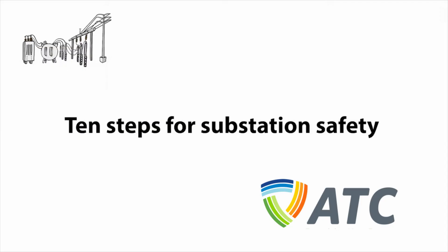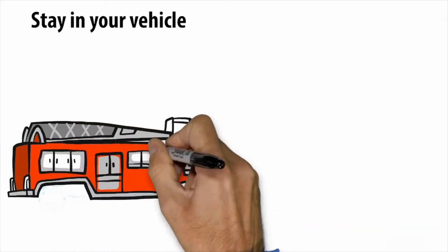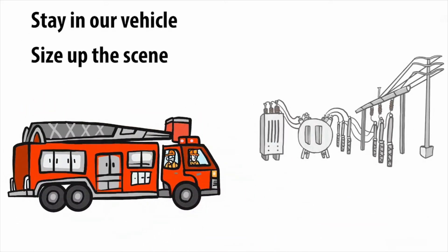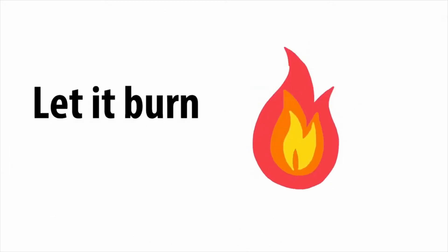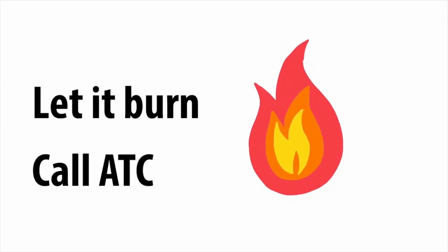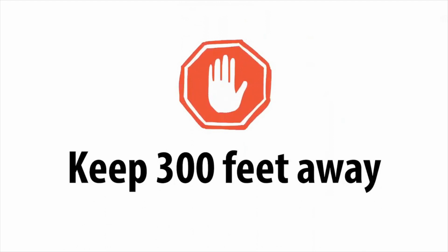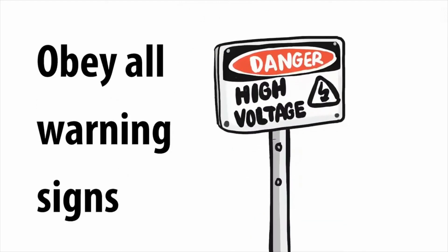Here are ten steps for substation safety. Stay in your vehicle. Size up the scene. Wait for an ATC representative to determine a safe approach. If it's on fire, let it burn. Call ATC. Keep everyone 300 feet away. Obey all warning signs.